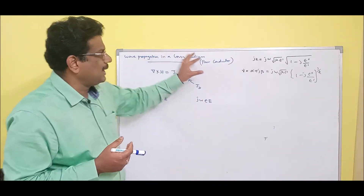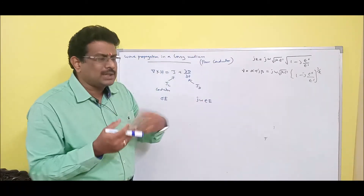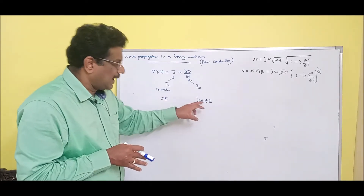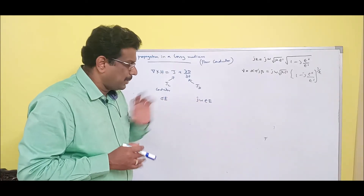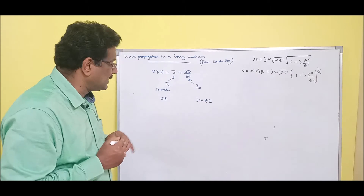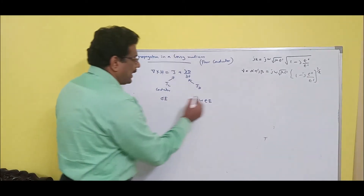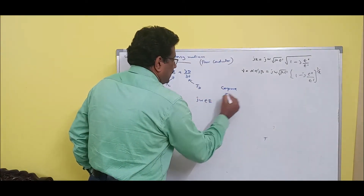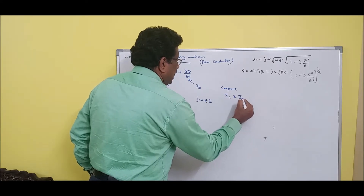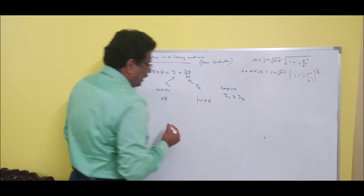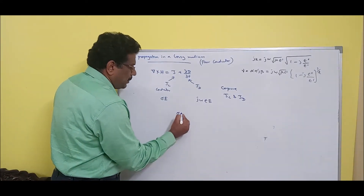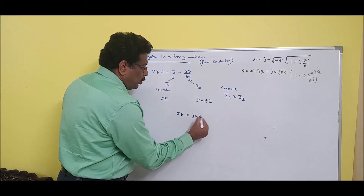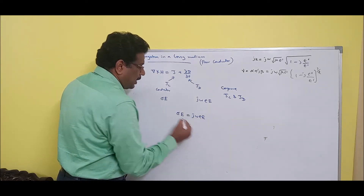Now we have taken a medium which is a combination of both — having some conductivity and some permittivity. If that is the case, why not compare JC and JD? If you compare, sigma*E can be equated to j*omega*epsilon*E.